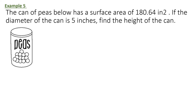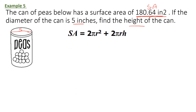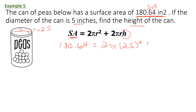For example number five, we have a word problem. A can of peas has a surface area of 180.64 inches squared. The diameter of the can is 5 inches — find the height. We use the surface area formula but solve for h. Since the diameter is 5 inches, the radius is 2.5. So: 180.64 equals 2π times 2.5 squared, plus 2π times 2.5 times h.